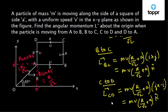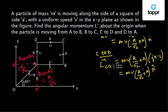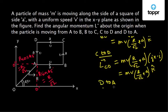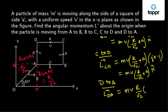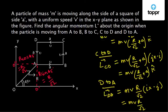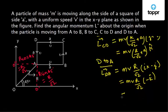For path D to A, the angular momentum vector L(D→A) = mv·(r/√2) with direction from r × v. Here r is in the positive x direction (i) and velocity is in the negative y direction (−j). So i×(−j) = −(i×j) = −k. Therefore L(D→A) = −mv·(r/√2)·k̂.